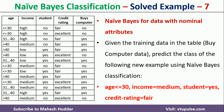The new example has the following attribute values: age is less than or equal to 30, income is medium, student is yes, and credit rating is fair. We have to classify this new example as either yes or no.